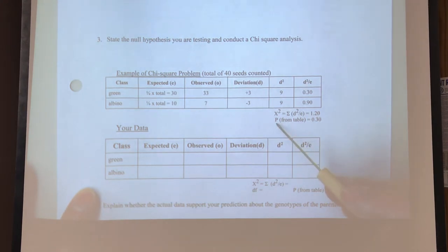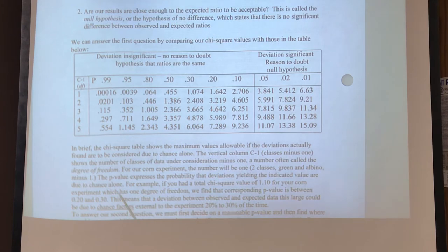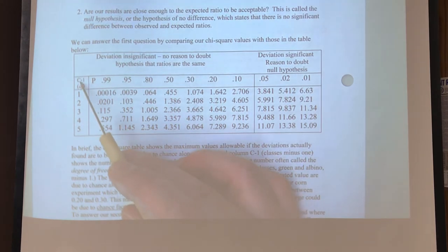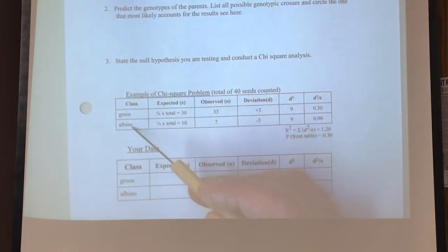All right, and then from there we can get our P, which is from the table, and that table is on page 122. All right, now over here on the side of that table, it says C minus 1. Now C means classes or categories. All right, so C minus 1.